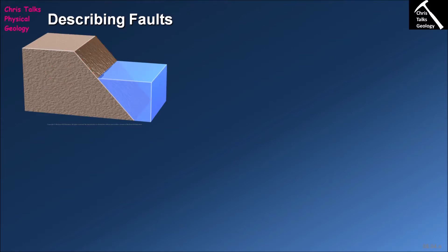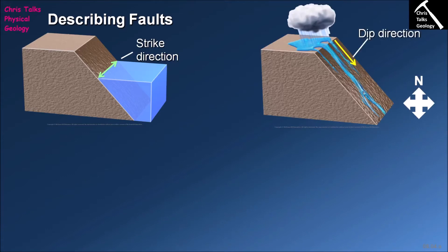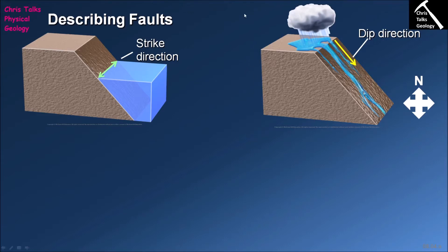We now need to think about how we can define the fault plane using measurements. The first measurement we can take is the dip of the fault plane, which essentially describes its angle — measured from an imaginary horizontal line, which has a dip of zero. A dip of 90 degrees would mean the fault plane is essentially vertical. In this particular instance, this fault plane has a dip of around 45 degrees.